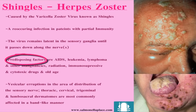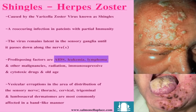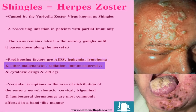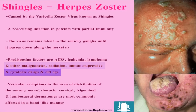The predisposing factors of this infection — the things that are more likely to create a reinfection — are AIDS, leukemia, lymphoma and other malignancies or tumours, radiation (which can be due to radiation therapy or natural radiation within the environment), immunosuppressive and cytotoxic drugs (used on cancer patients, transplant patients, and patients with autoimmune diseases), and of course old age, more likely in women than in men over the age of 50.